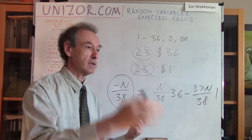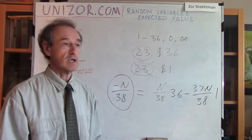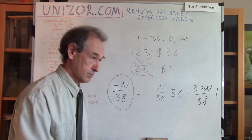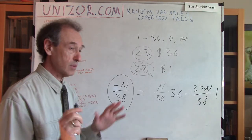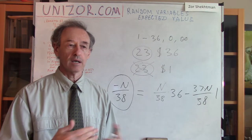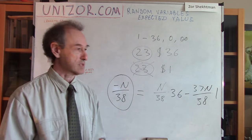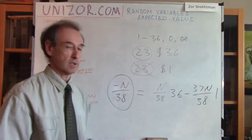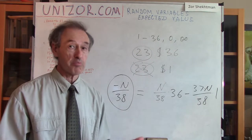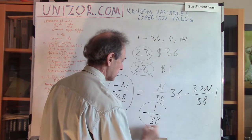As n increases, the result will be closer to this theoretical value, but not necessarily — you can play 10 games and win 10 times; in theory it is possible, although unlikely. If you go through 1 million games, it will be approximately this. So if this is approximately the monetary result of n games, then the average per game, dividing by n, would be minus 1/38.